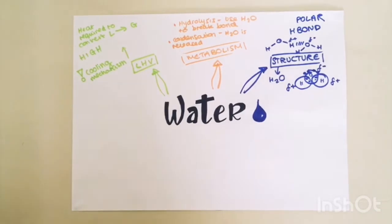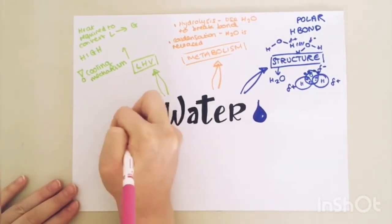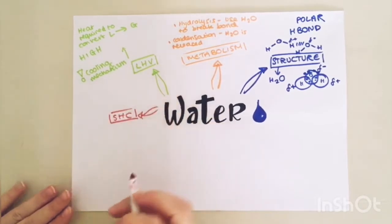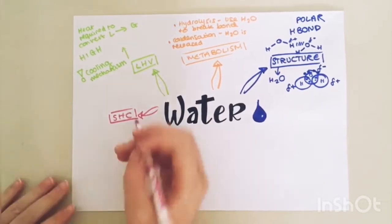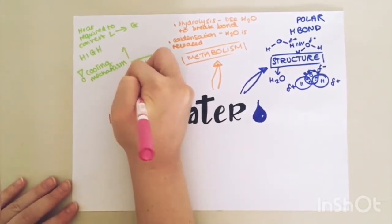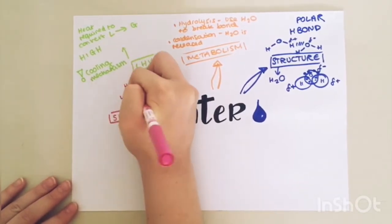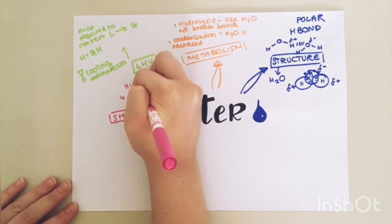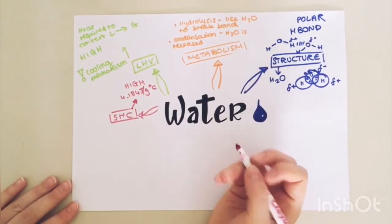The next really important property of water is its specific heat capacity. So specific heat capacity is basically the heat energy required to increase the temperature of a unit mass of a substance by a given amount. Water's specific heat capacity is very high. In fact, it is 4.184 joules per gram degrees Celsius. You do not need to know that, but you just need to know that it's high.